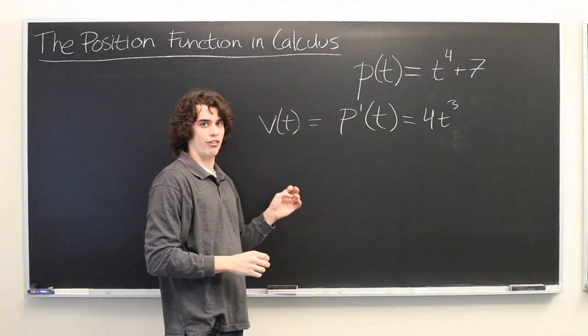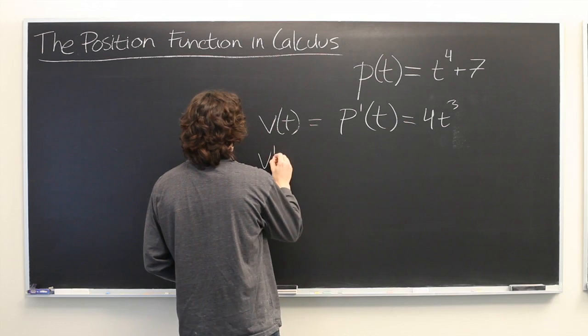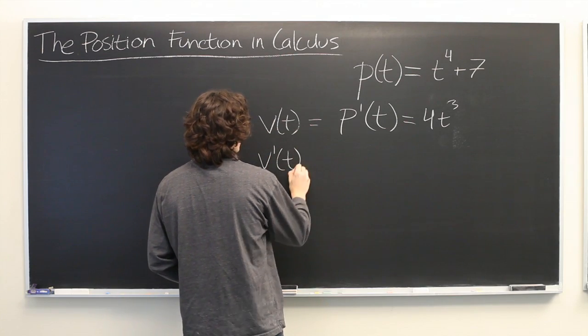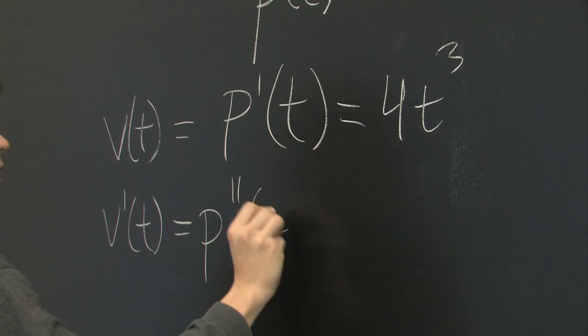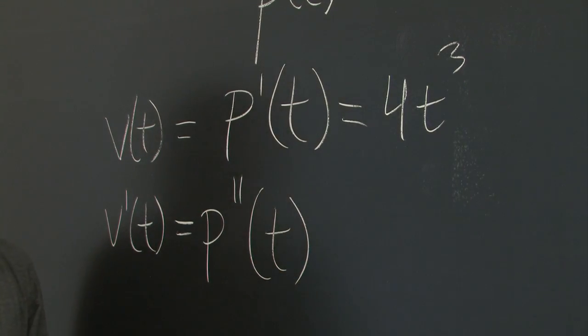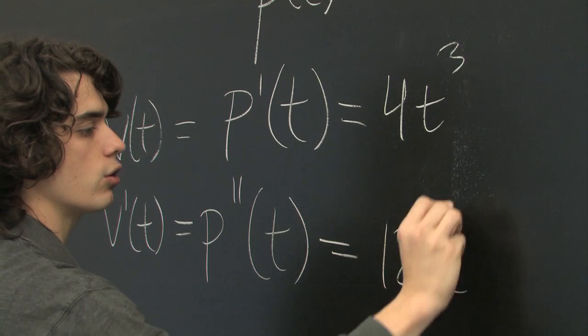But let's take the derivative again and see what we get. What if we do v prime of t, which is equal to the second derivative of p of t? 3 times 4 is 12, we get 12t squared.